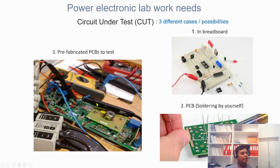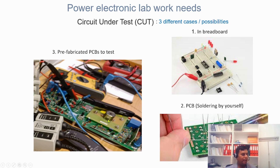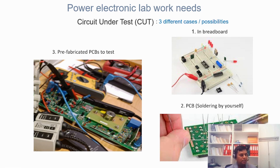The third possibility is an already ready-to-use PCB provided in the lab. For example, we have a buck converter PCB where you do not need any additional components, breadboard, or through-hole PCBs — everything is prefabricated and soldered. You just connect the power supply as input, check the output, and measure voltage or current at different points, including input current, output current, and output voltage.